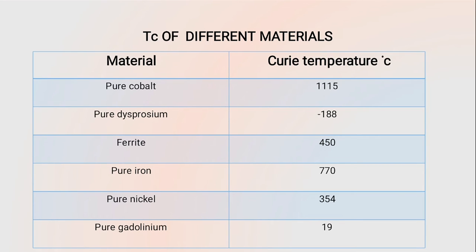This table shows the Curie temperature for different pure metals. Iron has a Curie temperature of 770°C, cobalt has 1115°C, nickel has 354°C, and gadolinium has 19°C.